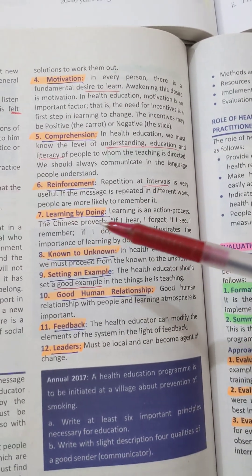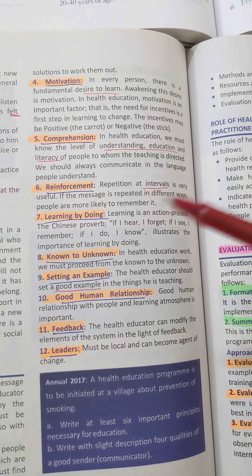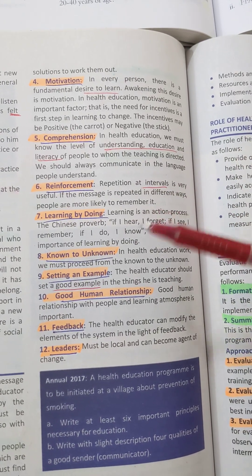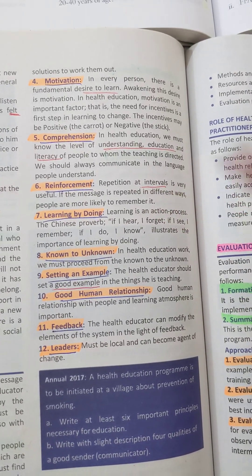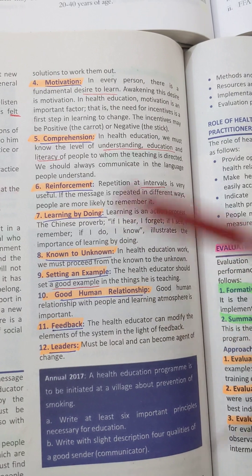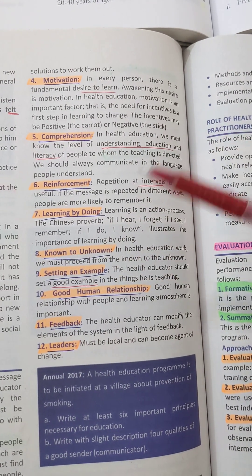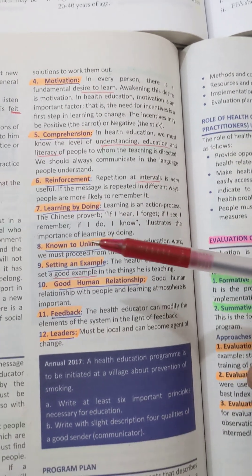Seven is learning by doing. As it is said: if I hear, I forget; if I see, I remember; and if I do, I know. This illustrates the importance of learning by doing. So we should teach people by demonstrations and actually teaching them how to do it.